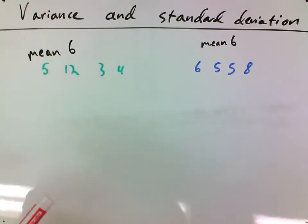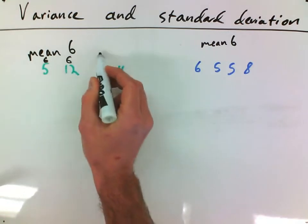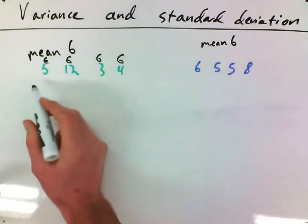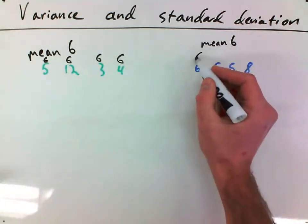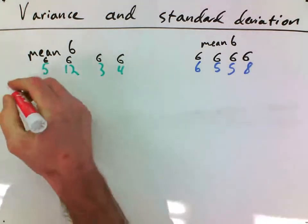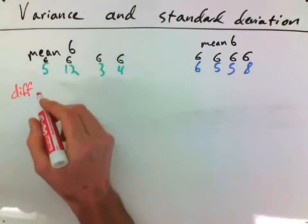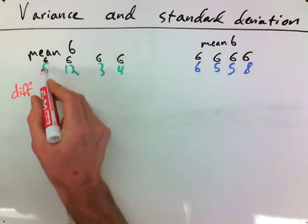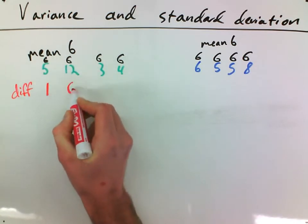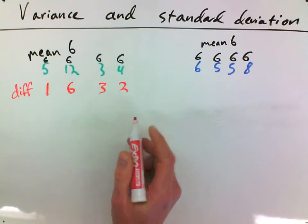So how to find them. For variance, our first step is the mean was 6, and same thing over here, the mean was 6. So what I want to do is find the difference each time between the mean and what actually happened. So this time the mean was pretty good, it was only off by 1. This time it was off by 6. This time it was off by 3, and this time it was off by 2.